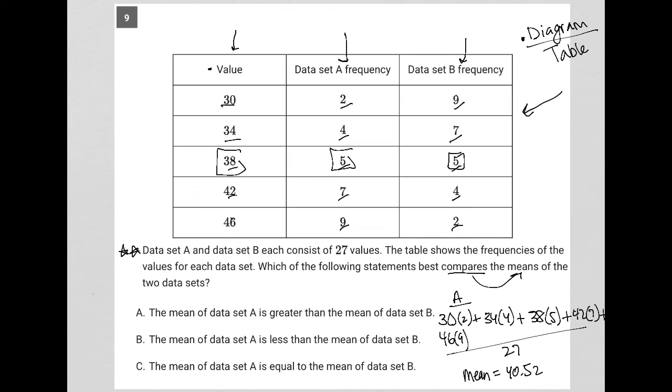I can do the exact same thing for data set B. The setup is exactly the same. I have 9×30, 7×34, 5×38, 4×42, and 2×46, and I'm dividing all that by 27.